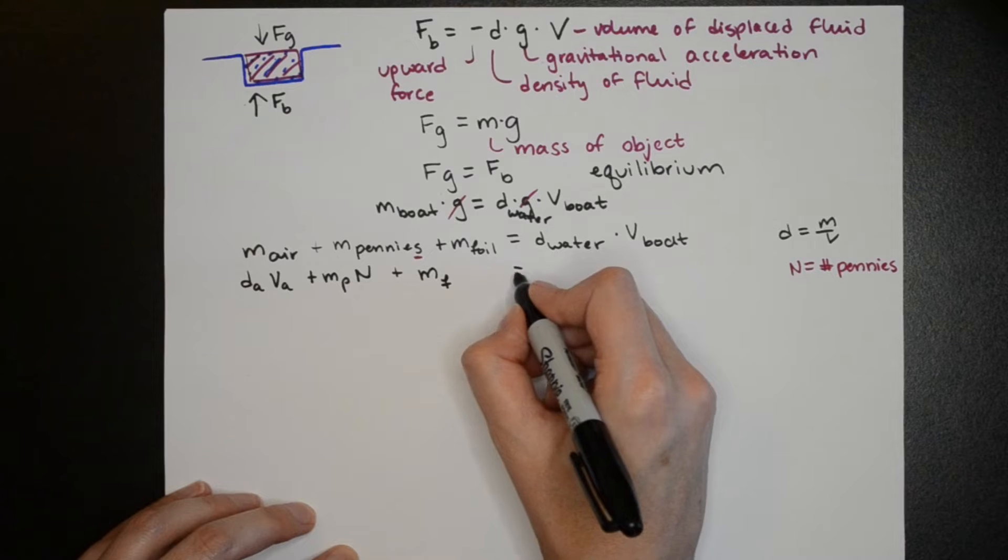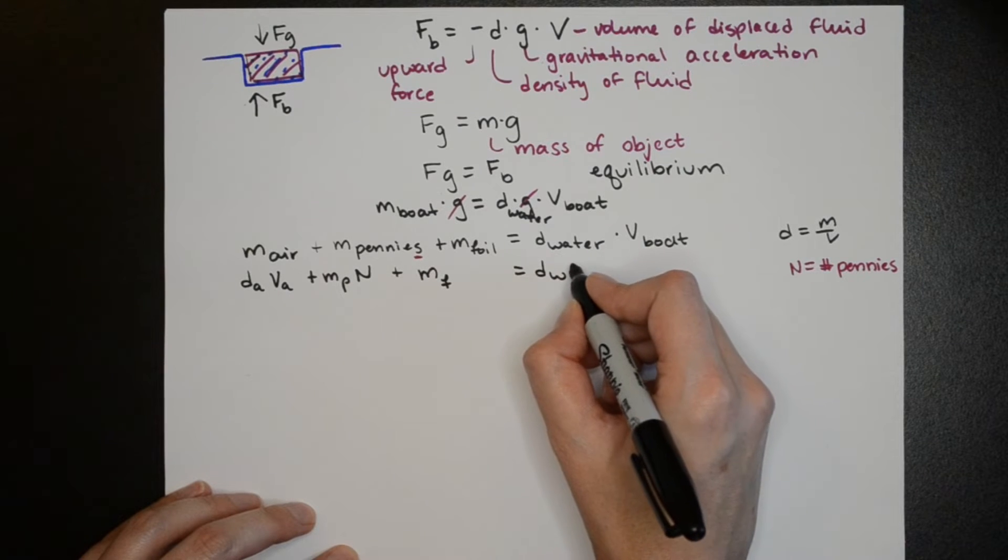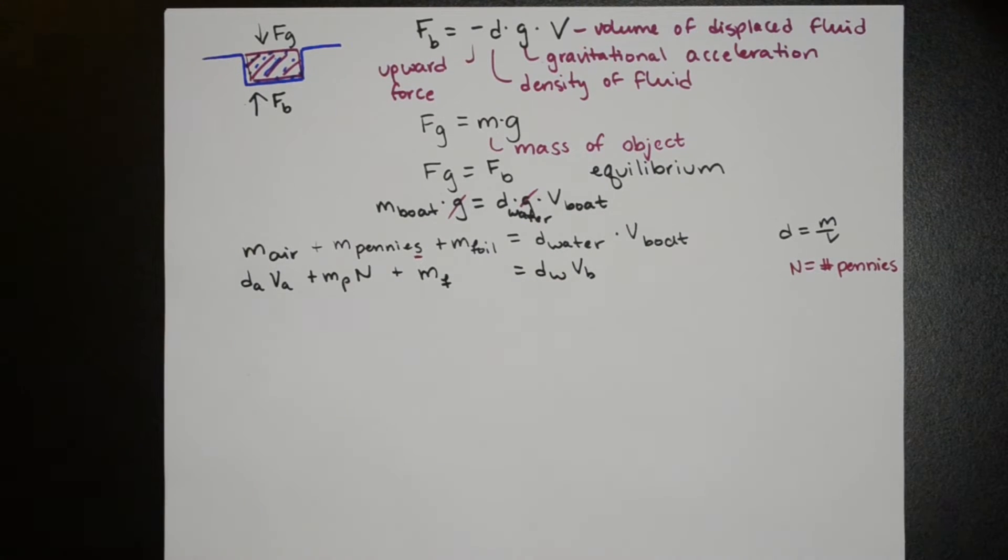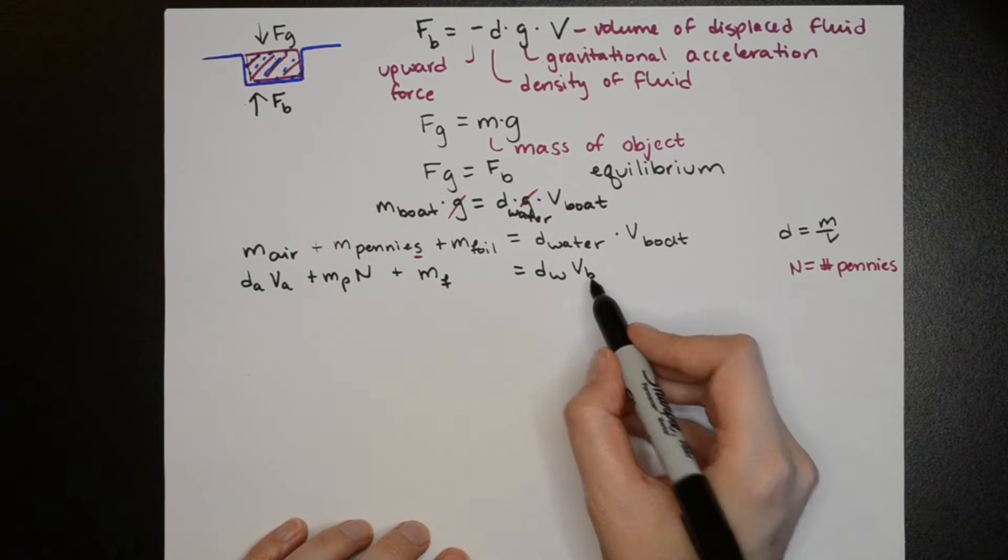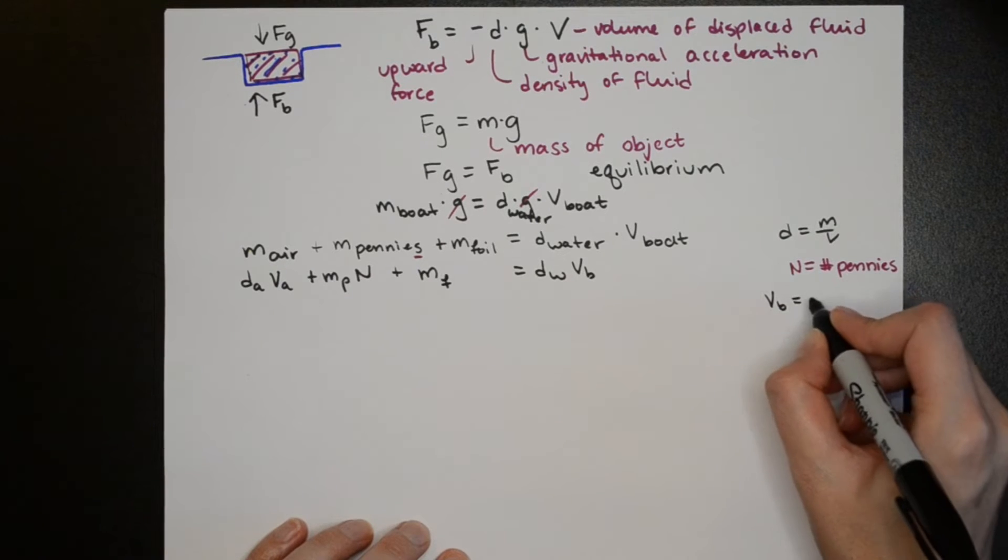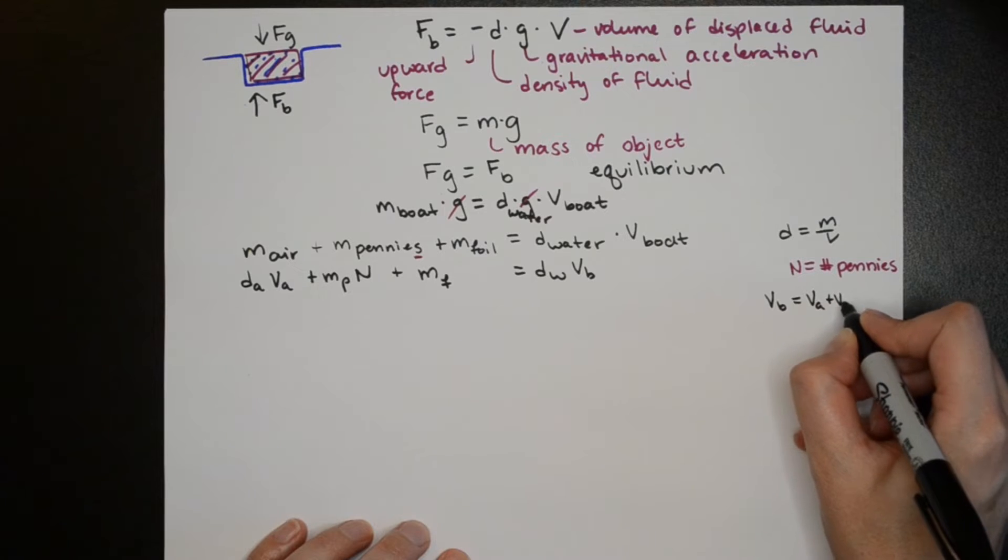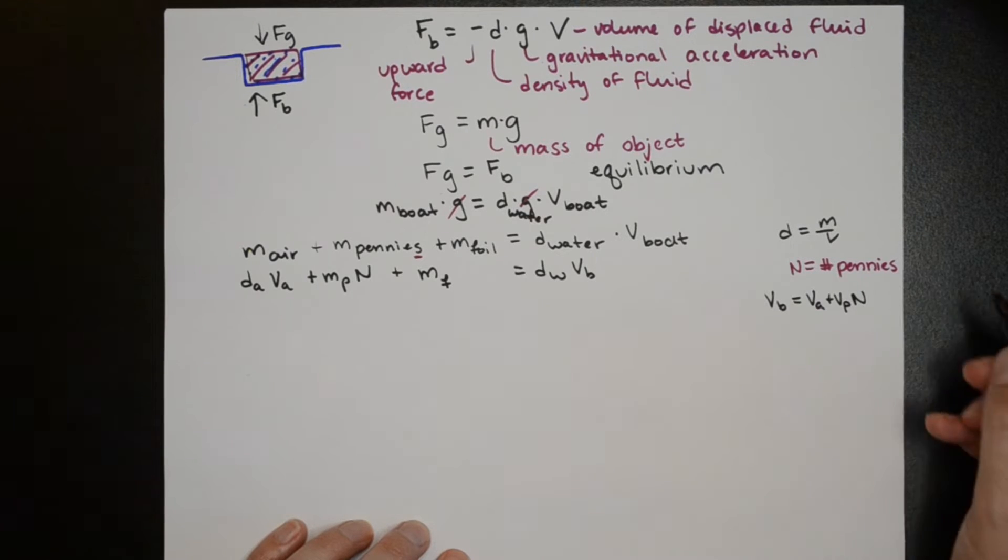The right hand side will remain the same. But now we can define the volume of the boat as its subcomponents. So the volume of the air in the boat plus the volume of a penny times the number of pennies plus the volume of the foil.